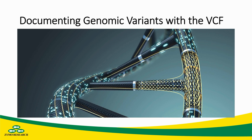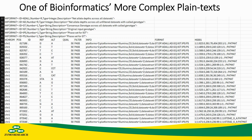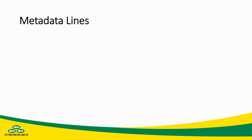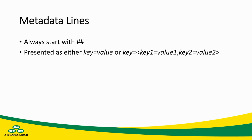Going into how we document genomic variants with the variant call format — this is one of bioinformatics' more complex plain text formats, consisting of lines of key value data as well as lines of tabular data. Starting off with describing the metadata lines, which always begin the VCF file: these lines will always start with a double pound sign. They will always be presented as either a key equals value, or key equals and then multiple key values in angle brackets separated by commas.